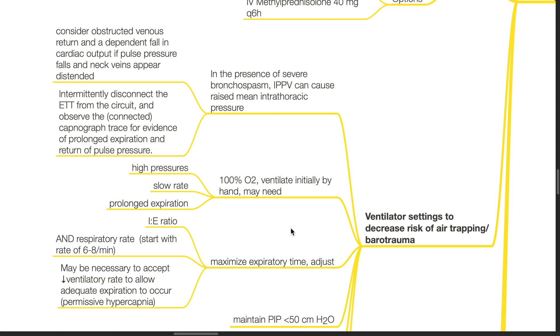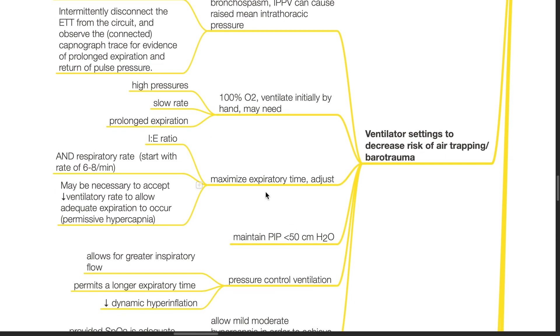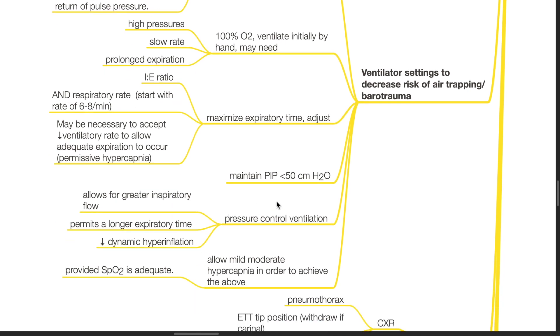Provide 100% oxygen and ventilate initially by hand. May need high pressures, slow respiratory rate and prolonged expiration to reduce air trapping. Maximize expiratory time. Adjust I:E ratio and the respiratory rate. Start at the rate of 6 to 8 per minute. It may be necessary to accept a reduced ventilatory rate to allow adequate expiration to occur, i.e. permissive hypercapnia.